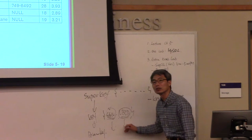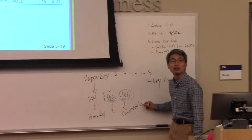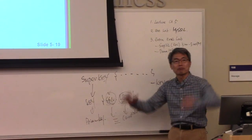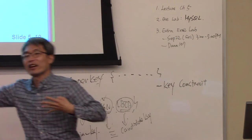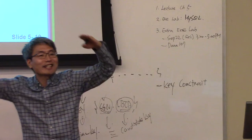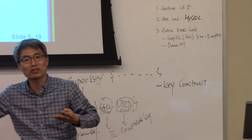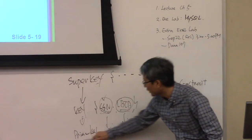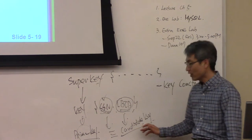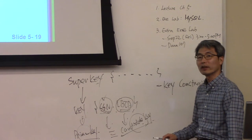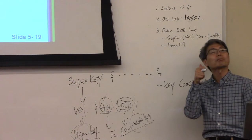If one key is selected as the primary key, the other keys are called candidate keys. They are almost identical — the same level. It is like an instructor and a TA having the same permissions on Canvas: almost the same, but one is teaching and the other is assisting. The only difference is that one is selected as the primary key and the other is the candidate key.